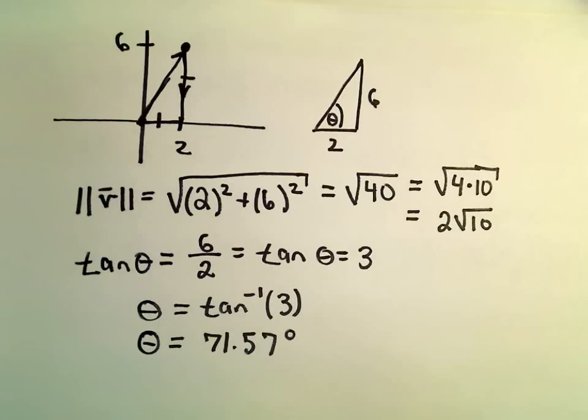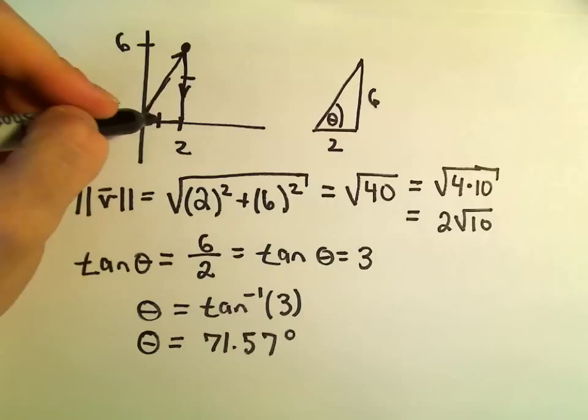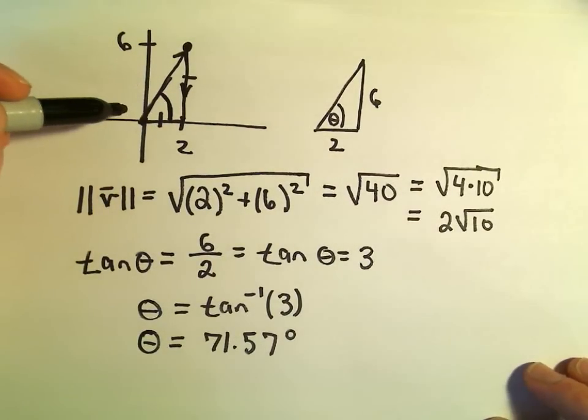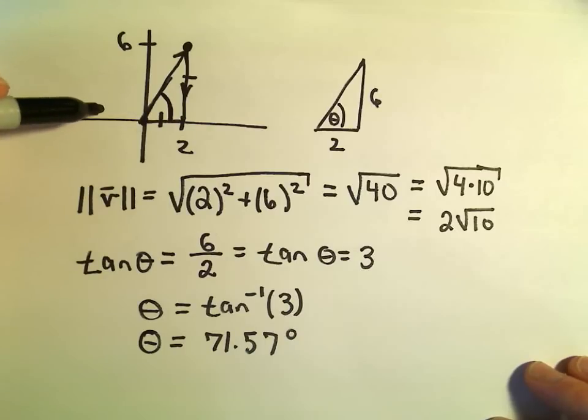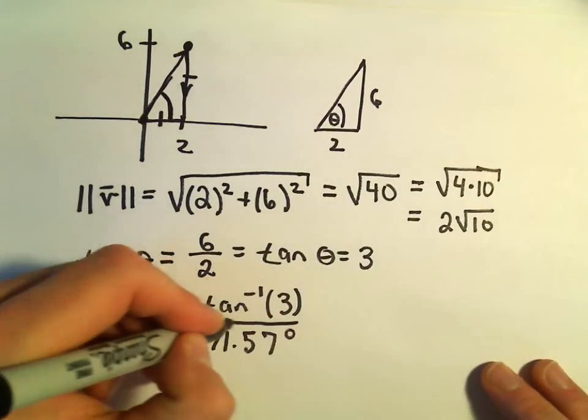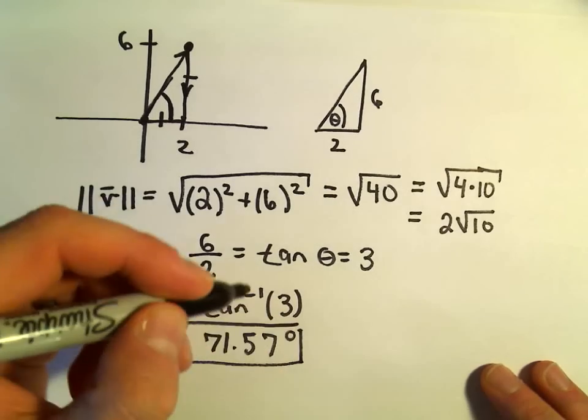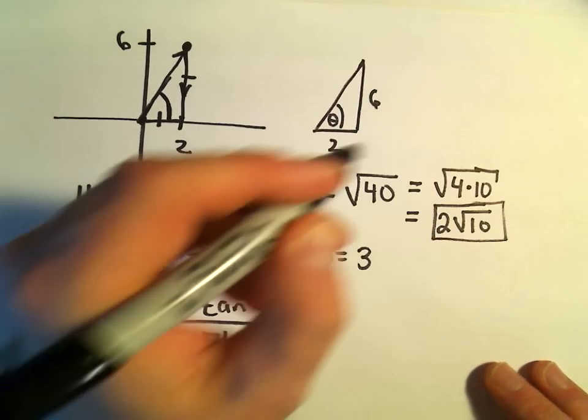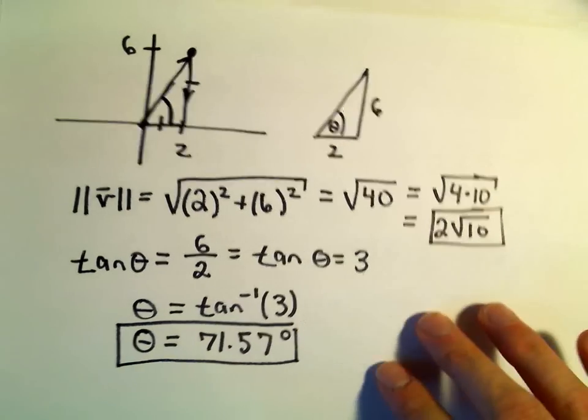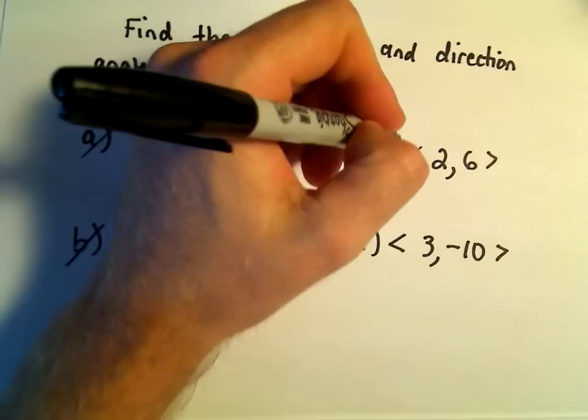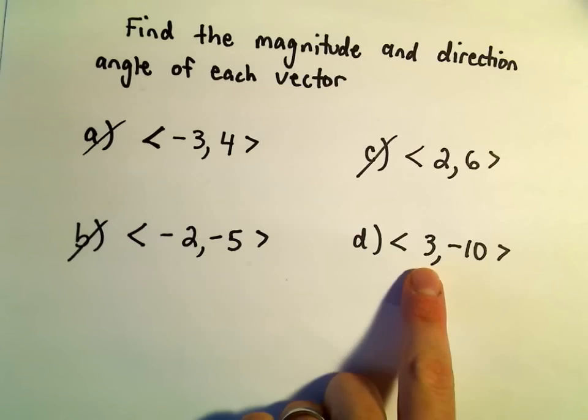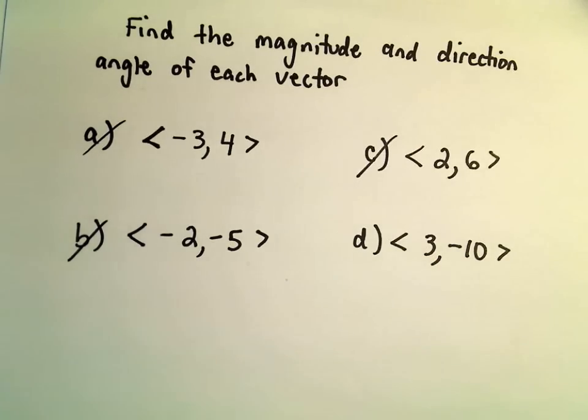So in this case, again, since our vector here is in quadrant 1, we've found this angle. We don't have to do any of this business like in the other examples of adding 180 or taking 180 and subtracting this. So now we've already got the direction angle for our vector. Let's do one other one here. Let's do the last one real quick. So we've got the, we want to find the magnitude and direction angle of the vector with components 3, negative 10.